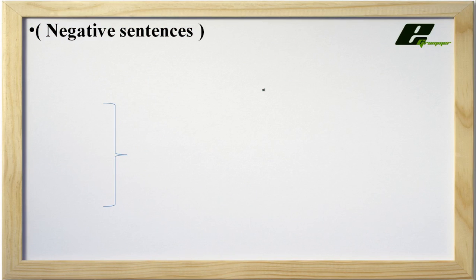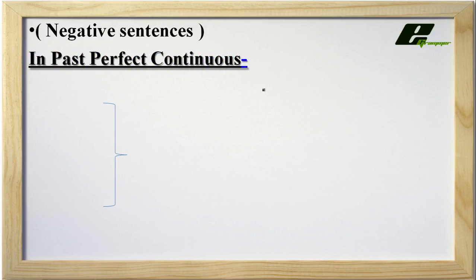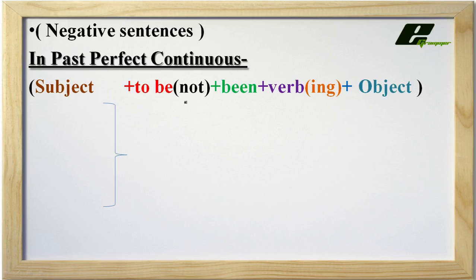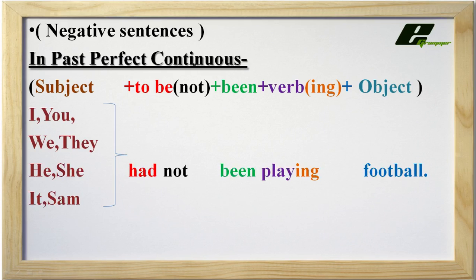Now let us see some negative sentences in Past Perfect Continuous Tense. The formula remains the same: Subject + to be + been + verb-ing + object. After exactly 'had', we are going to add 'not', and that sentence becomes a negative sentence. That is the most important part — after exactly 'had' we place 'not'. For example, Sam had not been playing football.